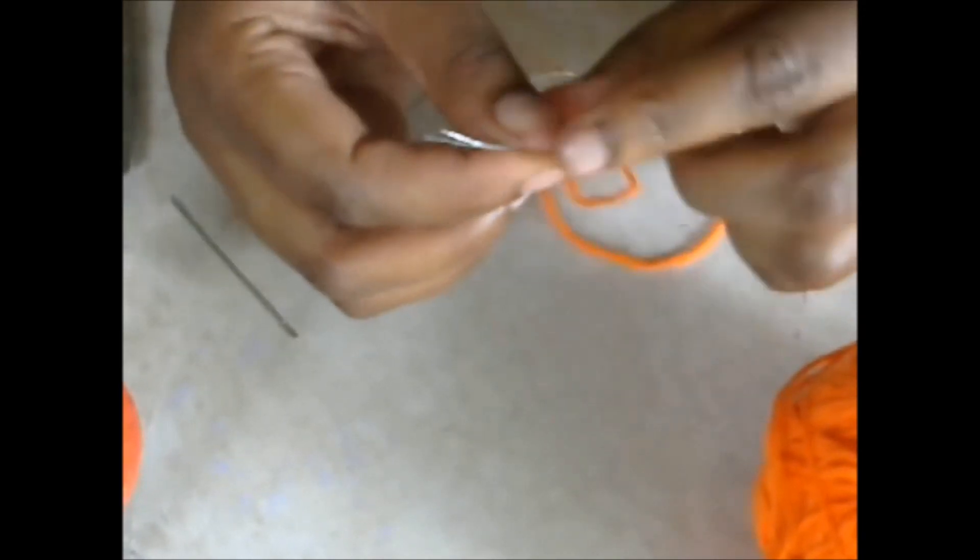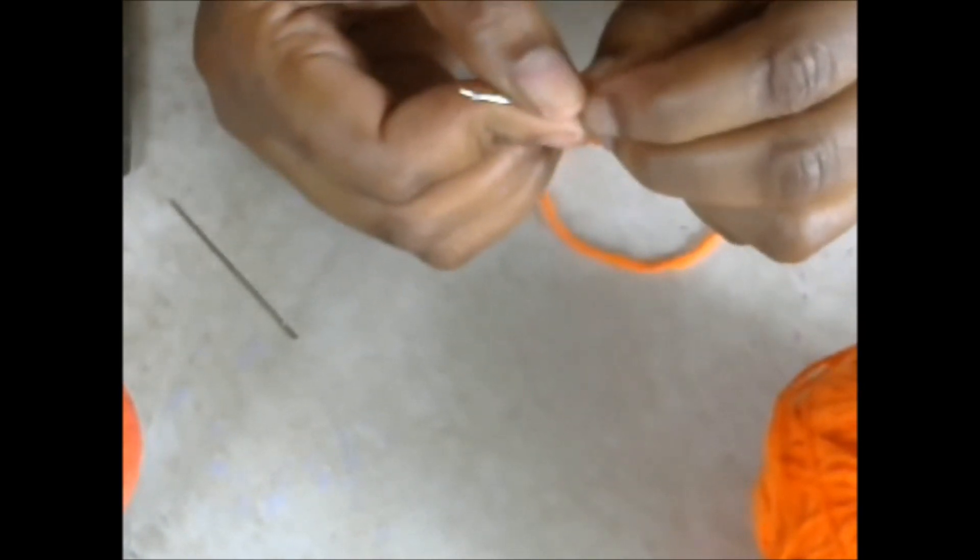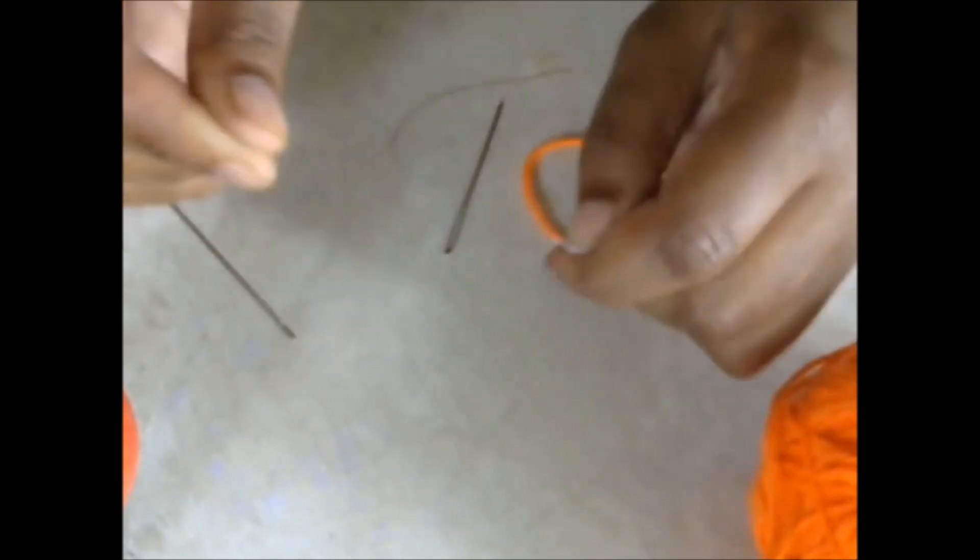You're just going to take it. You're going to fold it in half as much as you can, make it collapse as much as you can, and you're going to thread it right through. So you'll just take it, bring it through that eye.